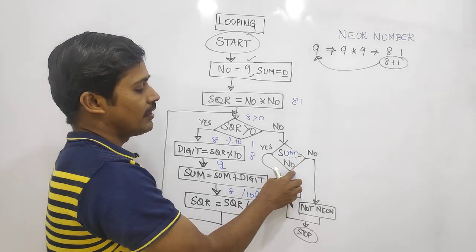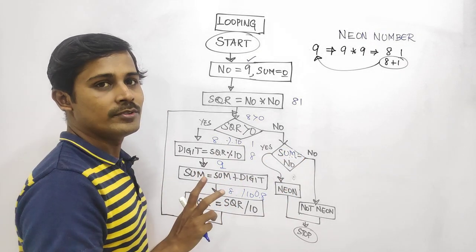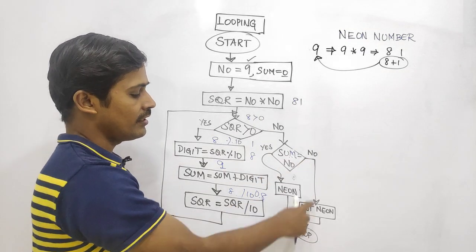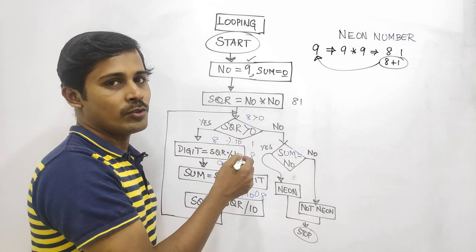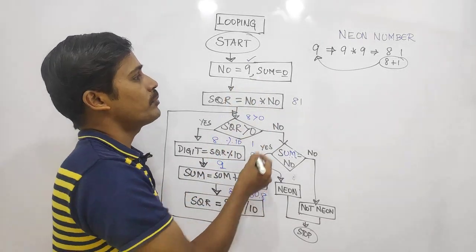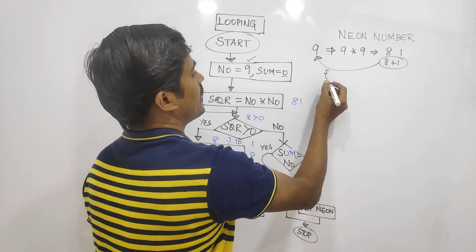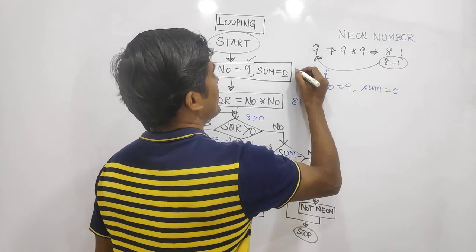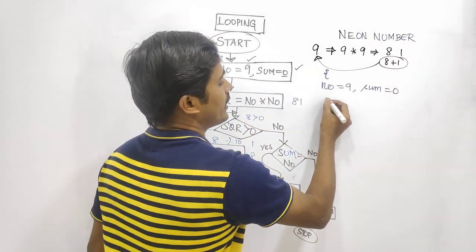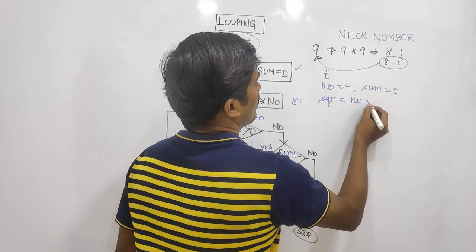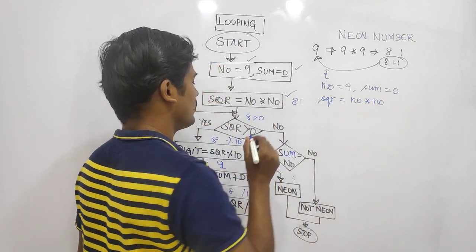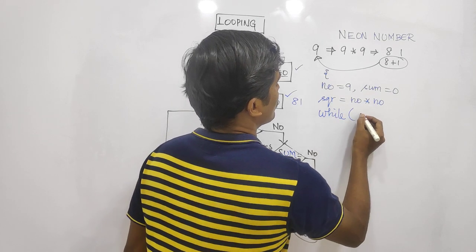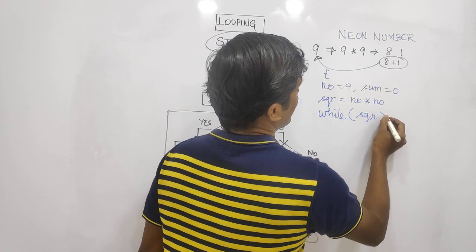If the sum is equal to the given number, that means it is a neon number. So we start the flowchart: number equals 9, sum equals 0. We compute the square. Then while square is greater than 0, we continue the loop.